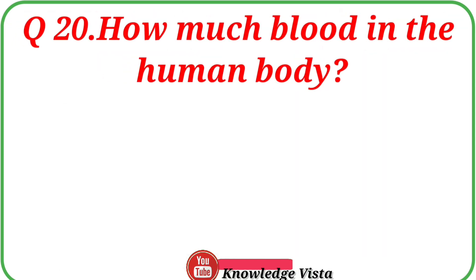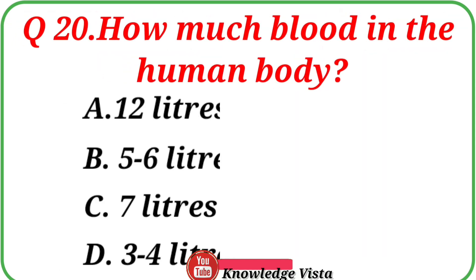Question number 20: How much blood is in the human body? Option A: 12 liters. Option B: 5-6 liters. Option C: 7 liters. Option D: 3-4 liters. Write the correct answer in the comment box.